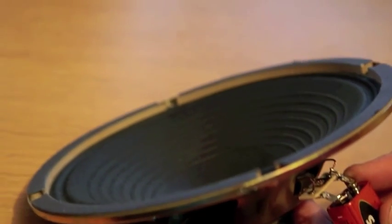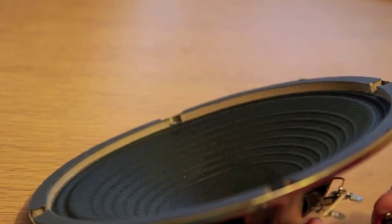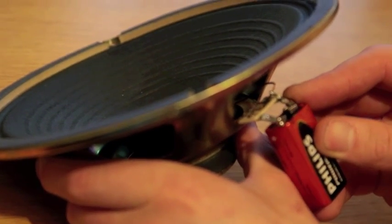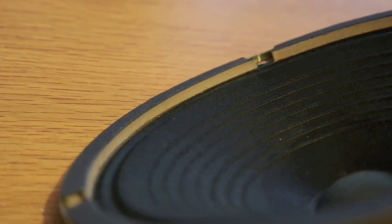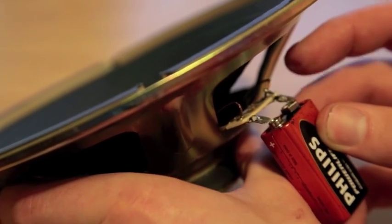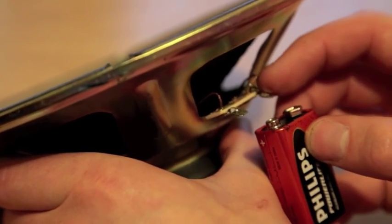You can see this way around the cone is moving inwards, meaning it's the wrong way around. If we switch it, see the cone is now moving out.